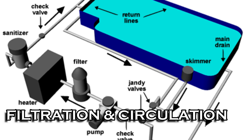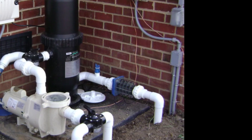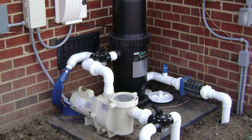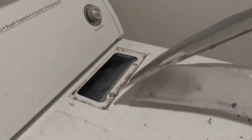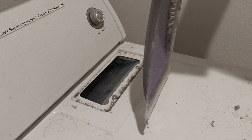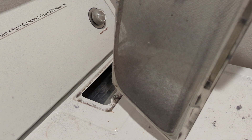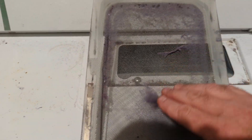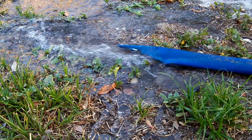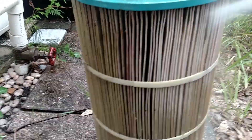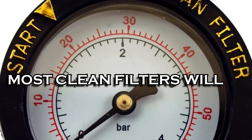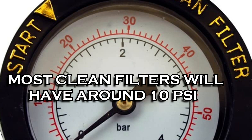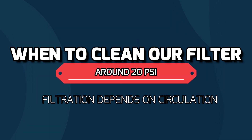Number two on our list is filtration and circulation. The purpose of a swimming pool filtration system is to clean, clear, and capture all the dead particles in your pool water — it's the exact same concept as a lint trap or screen in your dryer. The linty air passes through the screen, the lint gets trapped, then the clean air comes out the other side. We should backwash or clean our filters when the pressure gets 8 to 10 PSI over the just-cleaned PSI. Most filters will run about 10 PSI when fully cleaned, so we should clean our filters when the PSI gets to about 20 or so.